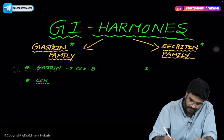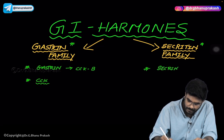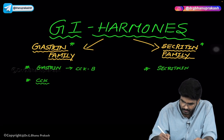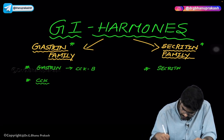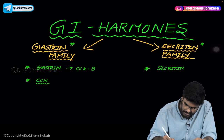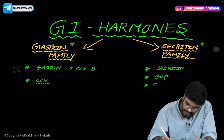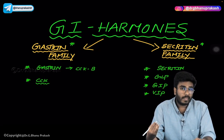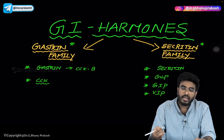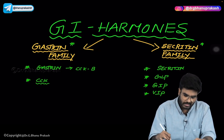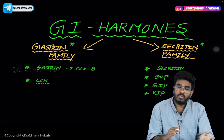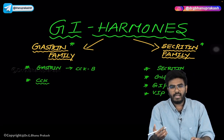The secretin family includes secretin, glucagon-like peptide (GLP), gastric inhibitory peptide (GIP), and vasoactive intestinal peptide (VIP). So GI hormones are classified into two families: the gastrin family, which includes gastrin and cholecystokinin, and the secretin family, which includes secretin, GLP, GIP, and VIP.